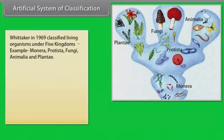Artificial system of classification. Whittaker in 1969 classified living organisms under five kingdoms. Example: Monera, Protista, Fungi, Animalia and Plantae.